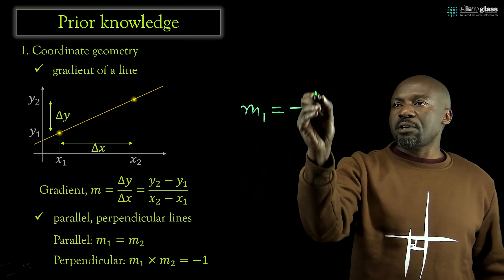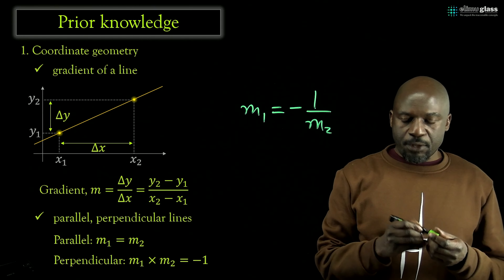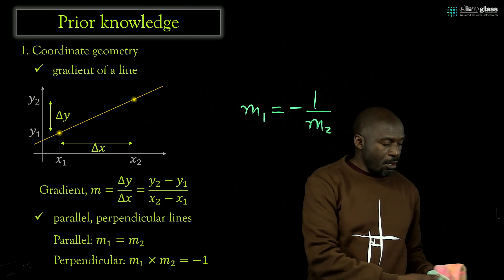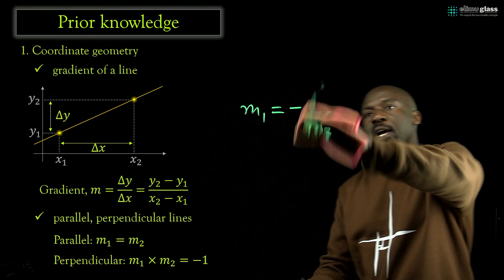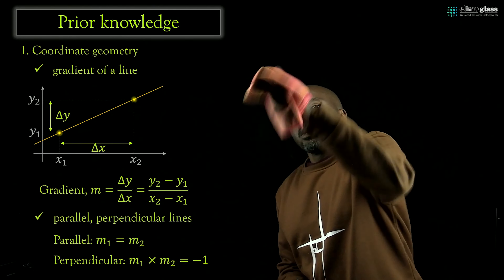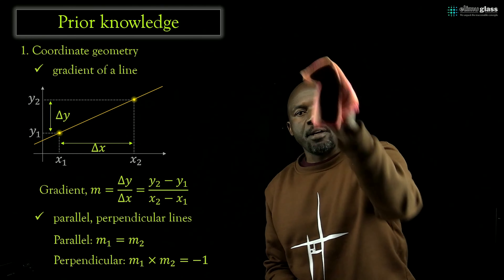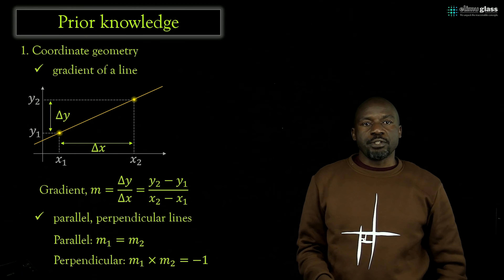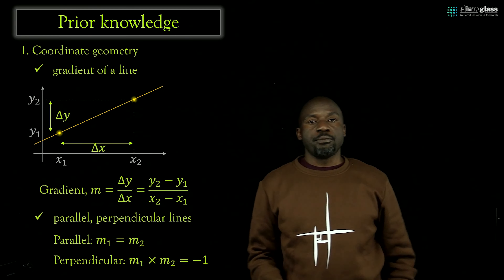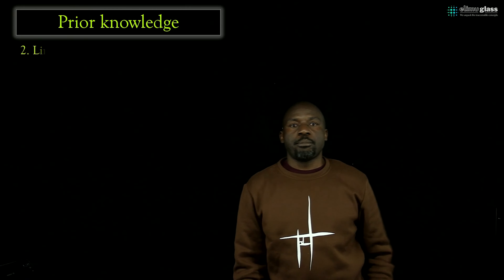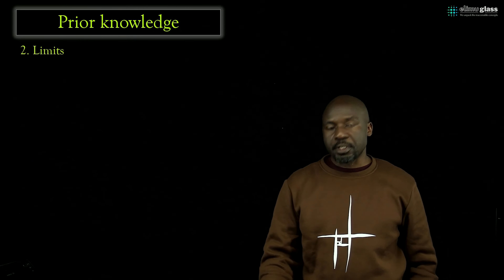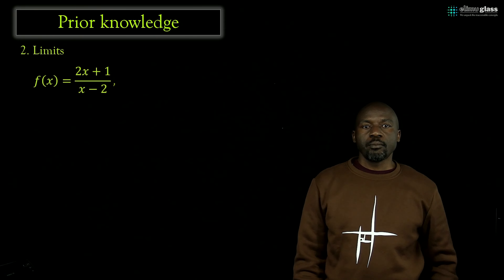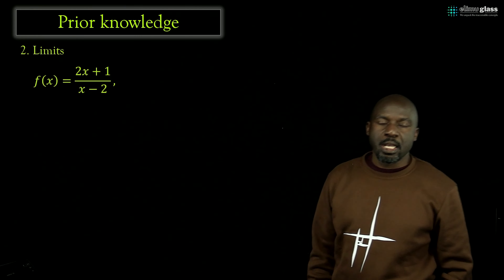I've written this down: if two lines are parallel and one has gradient m1 and the other m2, then the gradients will be the same. If the lines are perpendicular, their product of gradients will always be negative 1. Another way to say this is that the gradient of one line, m1, will be the same as the negative reciprocal of the gradient of the second line. This is the relationship for the gradient of lines that are perpendicular. This is the standard area of understanding we need to remember before we embark on differentiation.